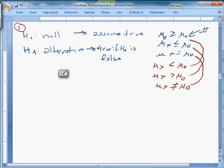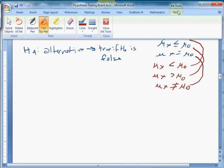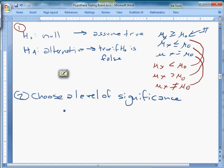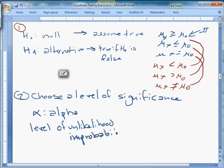Once we've formulated them properly, and that takes some work and practice, then what we're going to do is step two, which is choose a level of significance. We denote it like that, we call this alpha. And this is a level of unlikelihood or improbability sufficient to warrant disbelief.